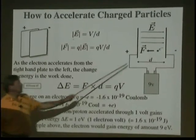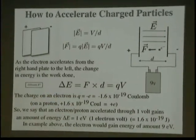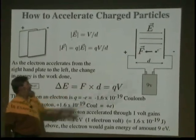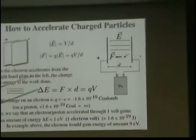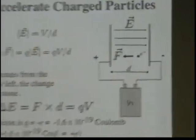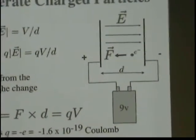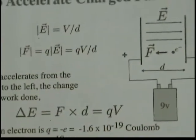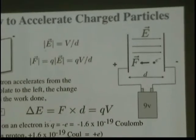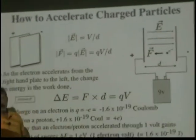You see that schematically over here. Suppose we have an electron, and it's sitting in this field. As it accelerates from the right hand to the left hand plate, the change in energy is equal to the work done. This is not the electric field, this is the change in energy. It's equal to the force times the distance, and from that you see that's equal to the charge on the particle times the voltage.